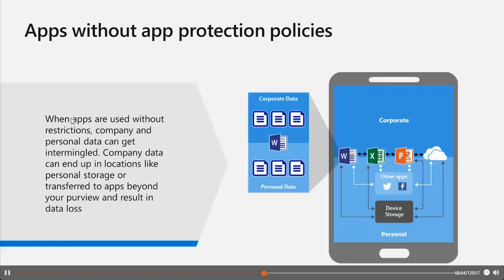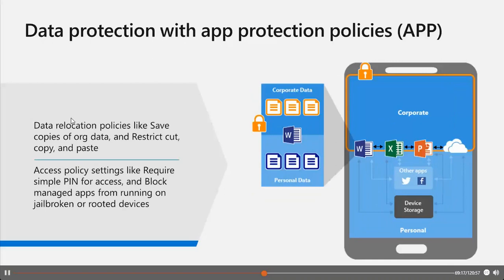MAM disallows or blocks sharing between corporate applications and personal data. For example, if you access company resources on SharePoint, you are not allowed to store information from that source to your personal OneDrive. This is the main point where mobile application management comes into the game. In the following slide you see exactly this protection scenario — data protection with app protection policies using the MAM approach. You can use app protection policies to prevent company data from being saved to the local storage of the device, and you can restrict data movement to other apps that aren't protected. Corporate data cannot be moved to personal storage.